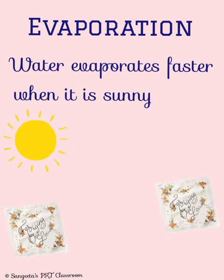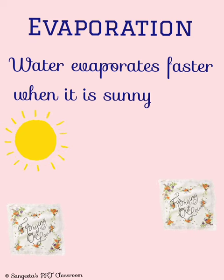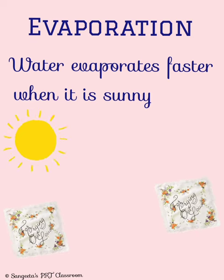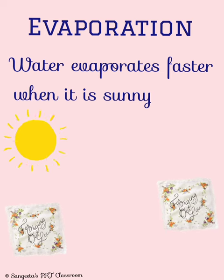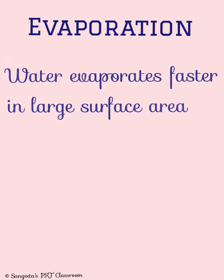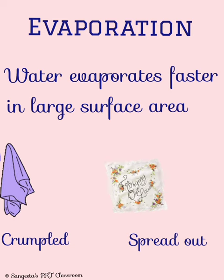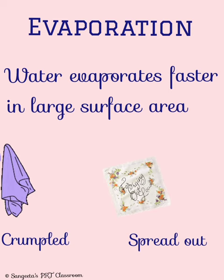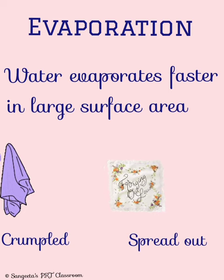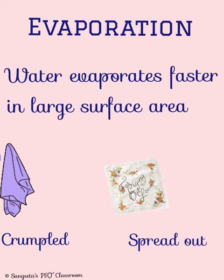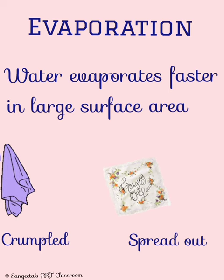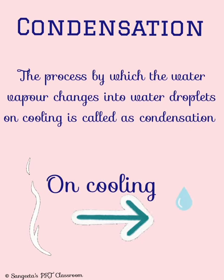Water also evaporates faster when it is sunny — placing one wet handkerchief in the sun and another in the shade, the one in the sun will dry faster. Also, evaporation is faster in large surface areas. Placing two wet handkerchiefs at the same spot, one properly spread out and the other crumpled, the spread-out one will dry faster due to the larger surface area.